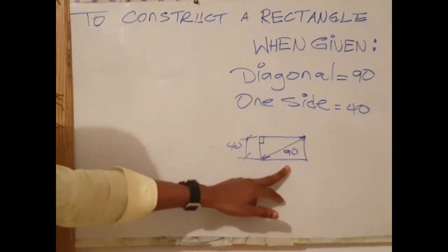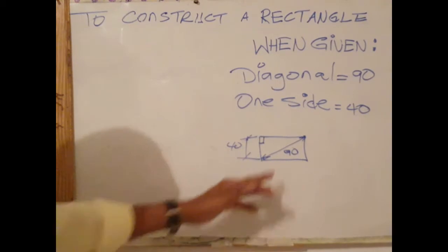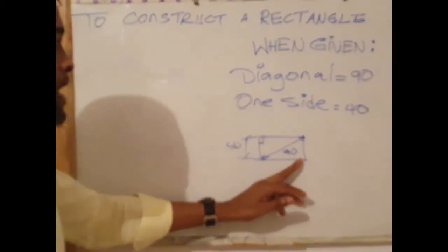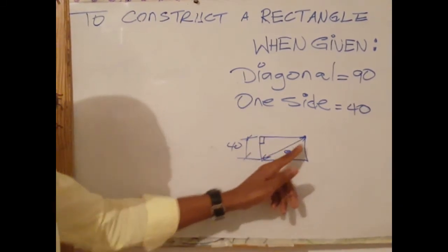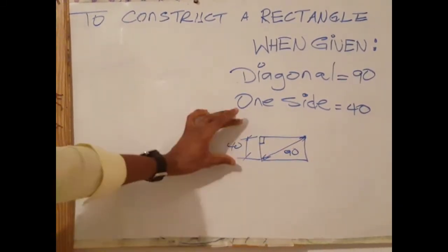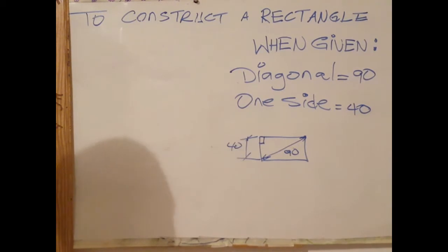This is a graphic representation of what we will be doing. All four sides 90, diagonal all four sides 90 degrees, diagonal is also 90 millimeters. One side is given as 40.